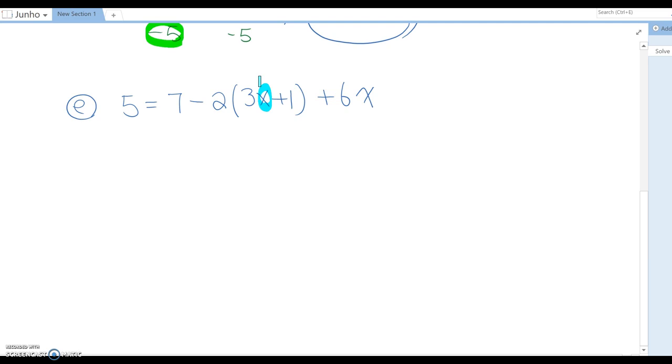Therefore we cannot use regular PEMDAS. Instead, we will use distributive property, which is a times (b plus c) equals ab plus ac. So now let's follow PEMDAS. Since this parenthesis includes an unknown value, we are using distributive property first.